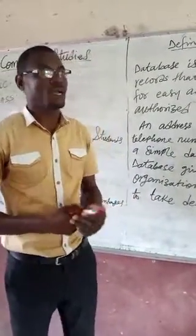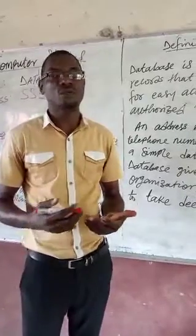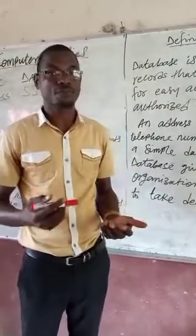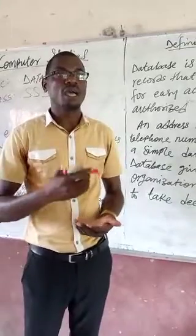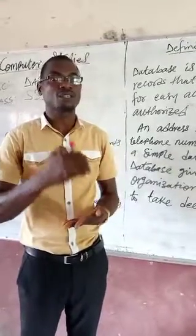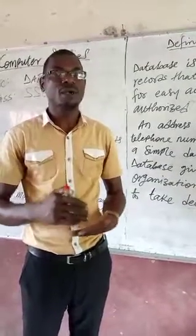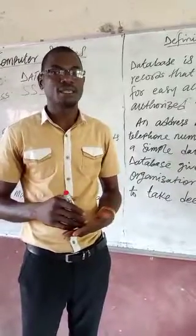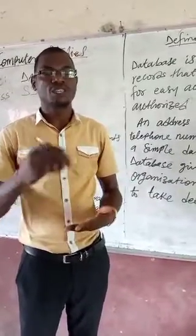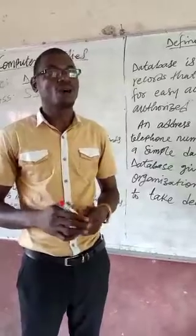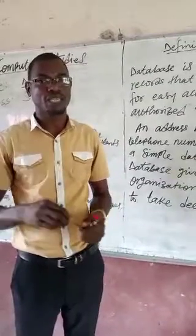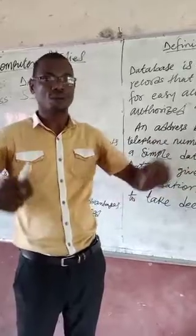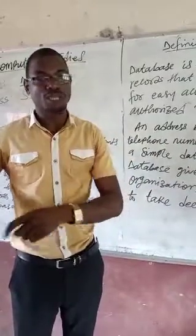For instance, in the school, when you are admitted, you were told to fill a form where you have your surname, your other name, your date of birth, your age, your state, your local government, nationality and other things. So all those things you are filling in is what is called data, and the essence of that data is to have your record in the school database.